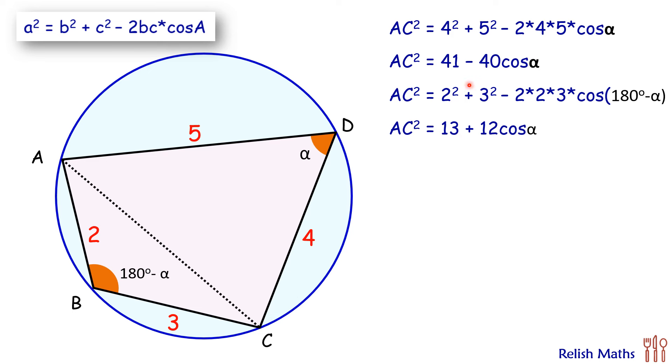Now from this second equation, we'll subtract our first equation. On subtracting, the AC² on both sides will get cancelled. So 13 - 41, that's -28, and 12 cos α minus (-40 cos α) becomes +52 cos α. Simplifying, we'll get cos α = 28/52, which simplifies to cos α = 7/13.